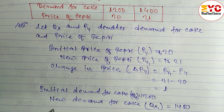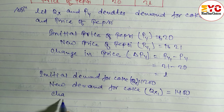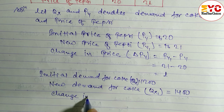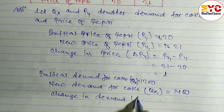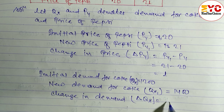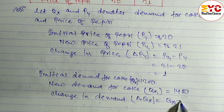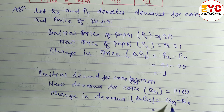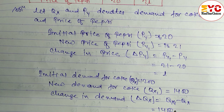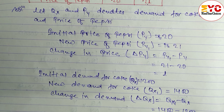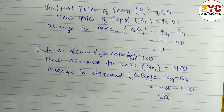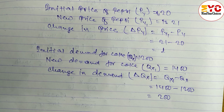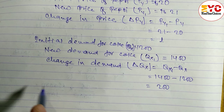Now we find the change in demand, denoted by ΔQx. The formula is ΔQx equals Qx1 minus Qx, so 1400 minus 1200 equals 200. Change in demand is equal to 200.